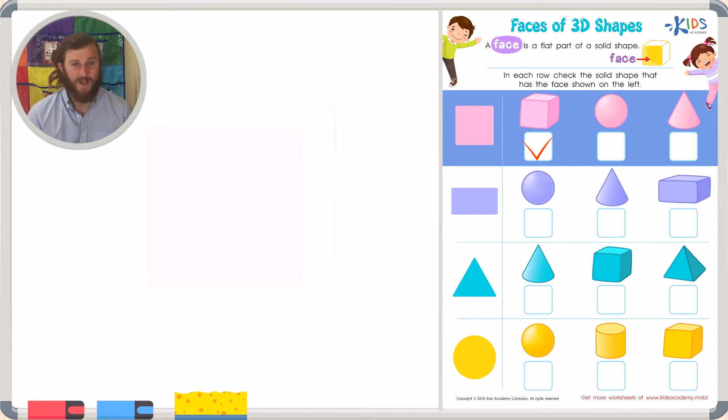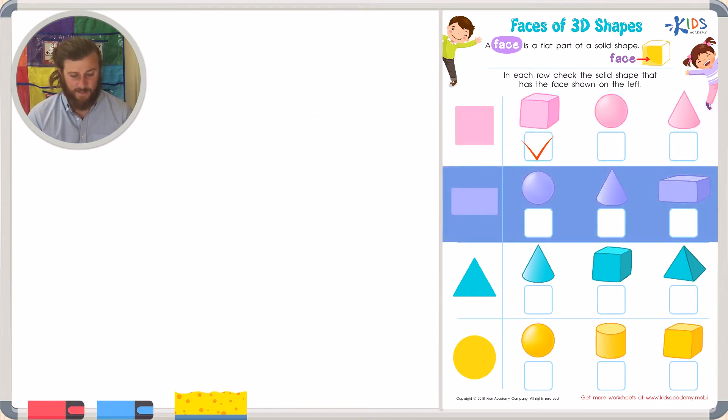Our next face is rectangular. Which shape does this rectangular face belong to? Our first shape is a sphere, and do you remember what I said about spheres? Spheres have no faces, so this can't be correct. Our next shape is a cone. A cone has that circular face on the bottom, but it doesn't have any rectangular faces, so this can't be correct.